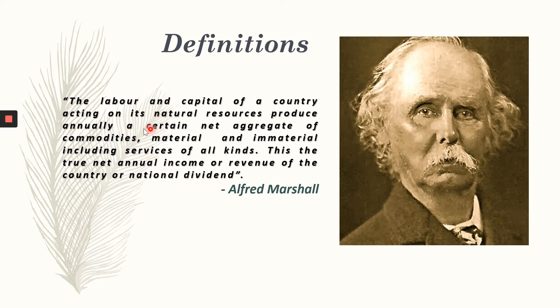What do we understand here? The labor and capital — in every country there are people, the population who are able to work — that is called labor. Capital is the money supply in a country. These two factors of production, labor and capital, act on the natural resources of a country. Every country is blessed with a certain amount of natural resources. For example, if you take India, we have the Himalayas, the Gangetic Plains, the Nilgiri Mountains — all these are called natural resources.